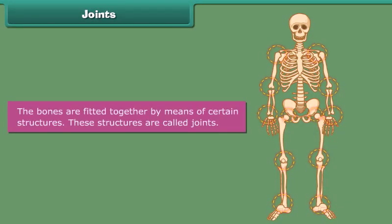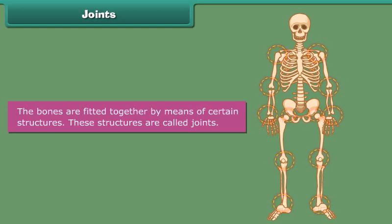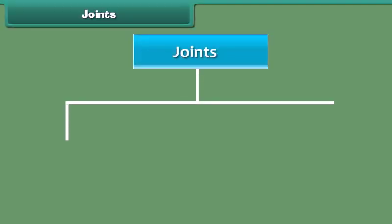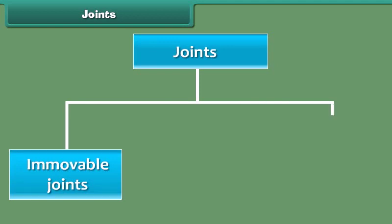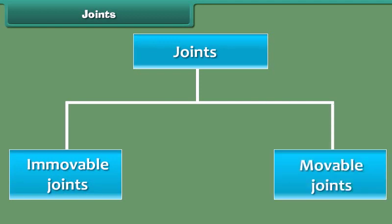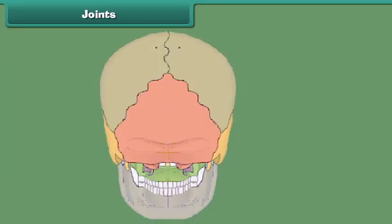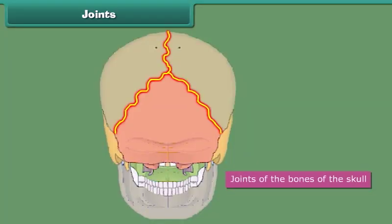The bones are fitted together by means of certain structures. These structures are called joints. Joints facilitate body movements. There are two main types of joints: immovable joints and moveable joints. Immovable joints are the joints where no movement of the bones is possible. The joints of the bones of the skull are immovable joints.